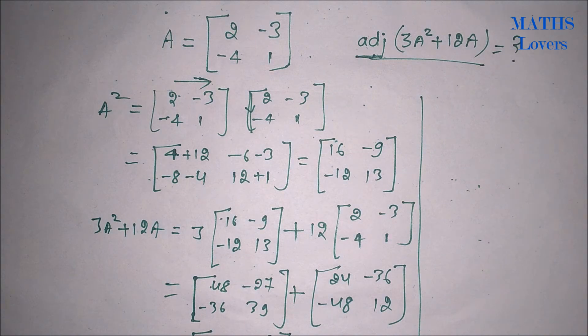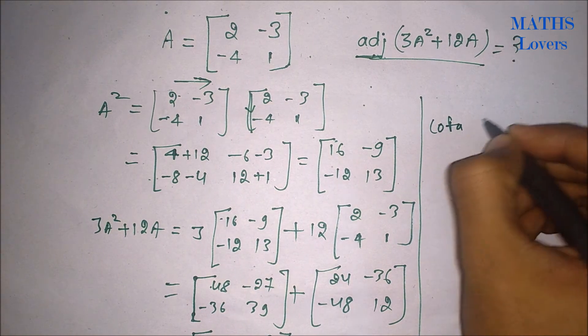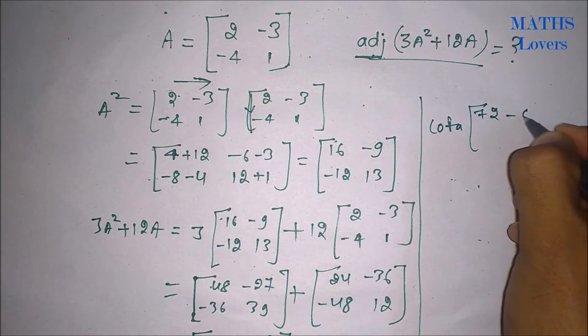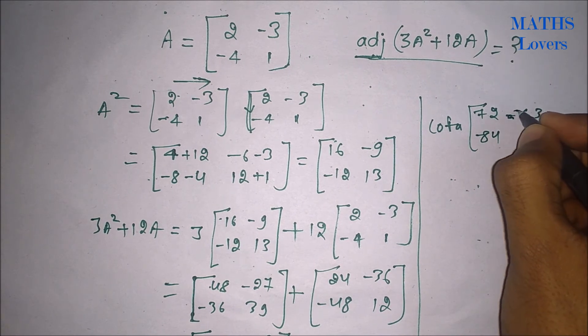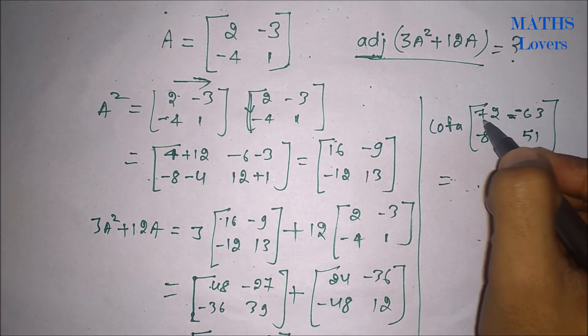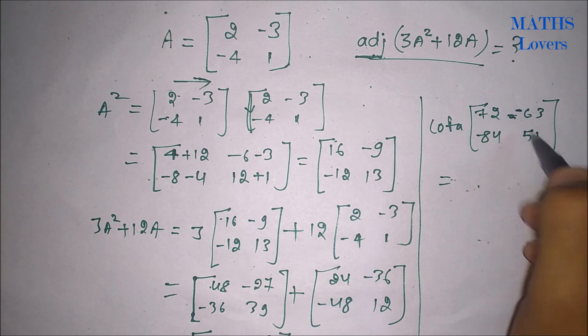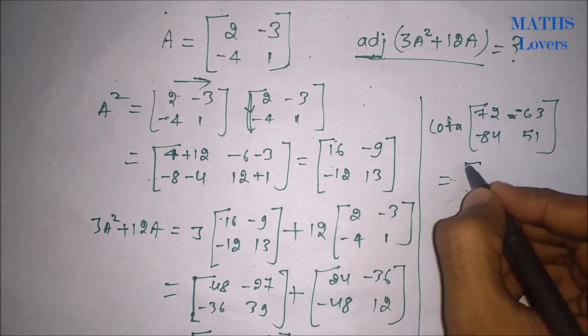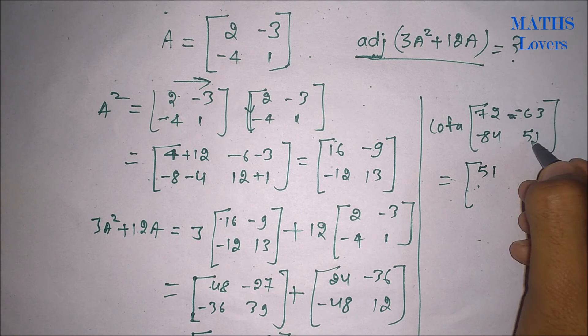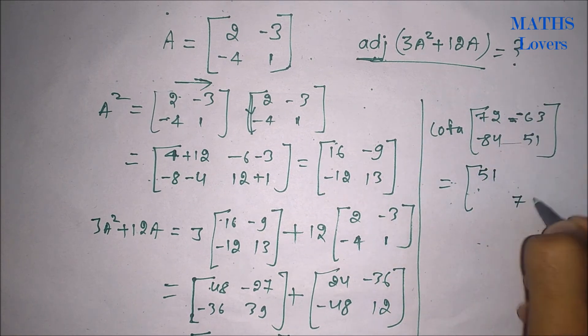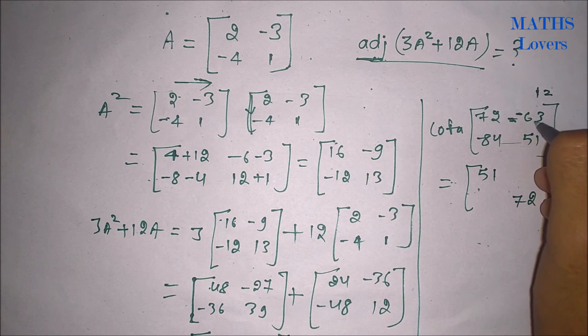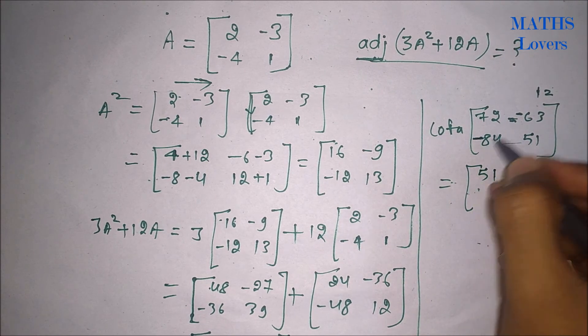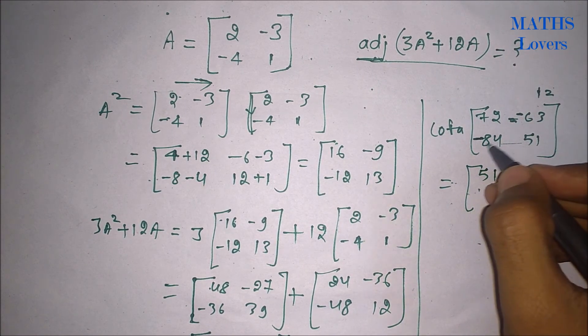So first we have to find the cofactors of this matrix. Cofactor of 72 will be this line closed and it will be 51, and 51's cofactor will be 72. Now this is position 1,2 that means it will be negative, so minus 84. So cofactor of minus 63 will be minus 84.